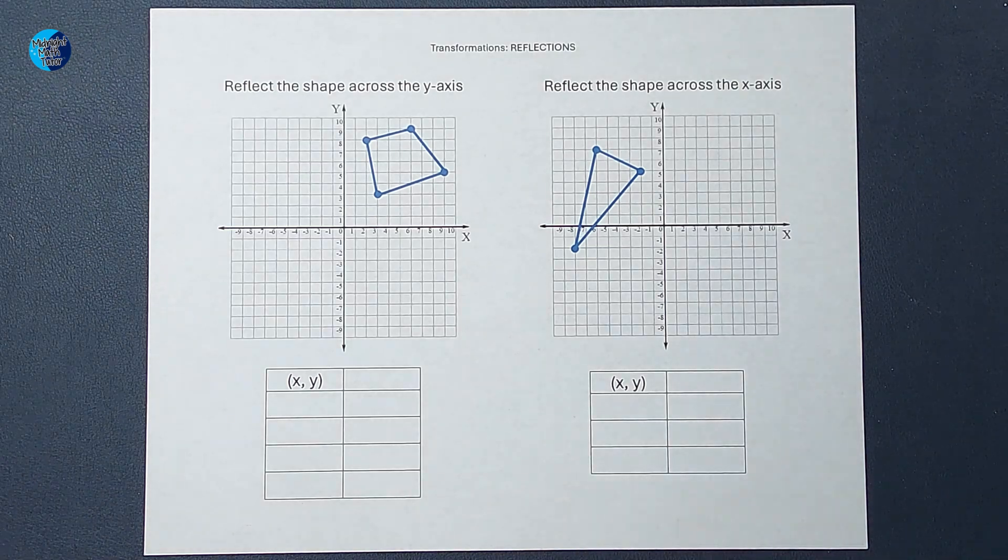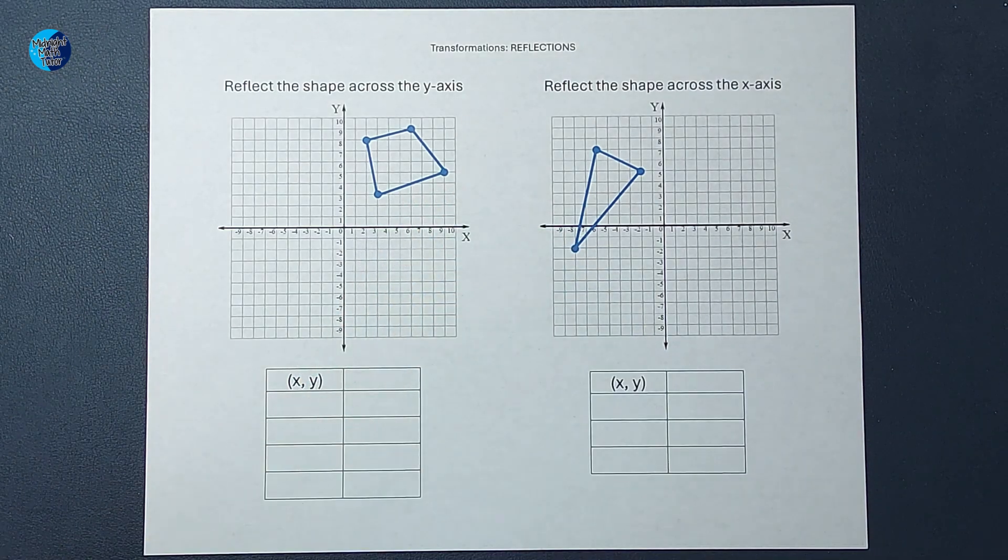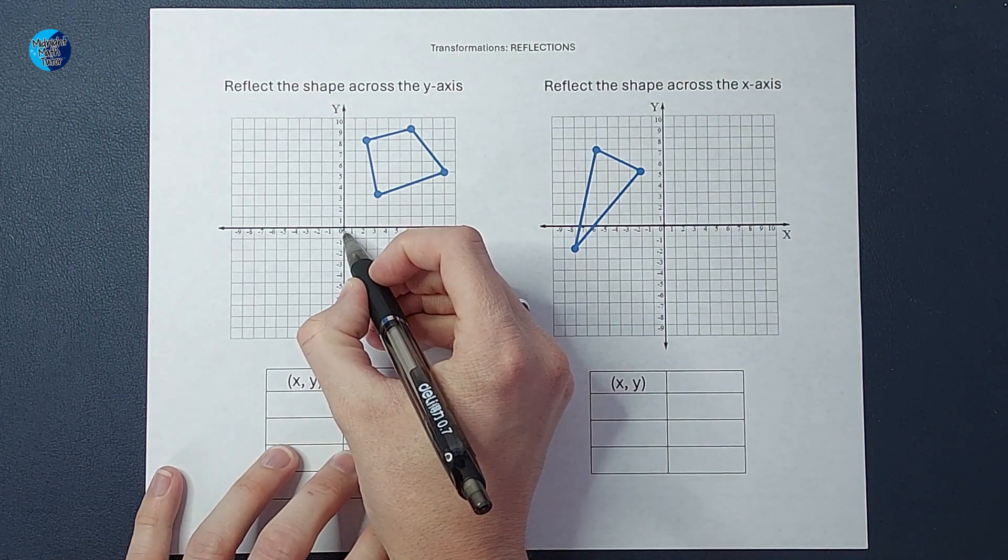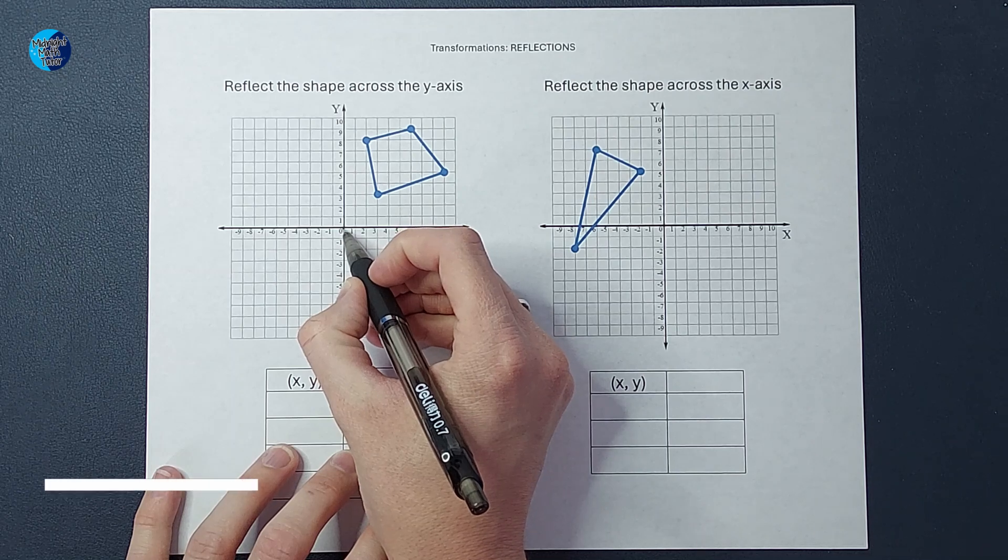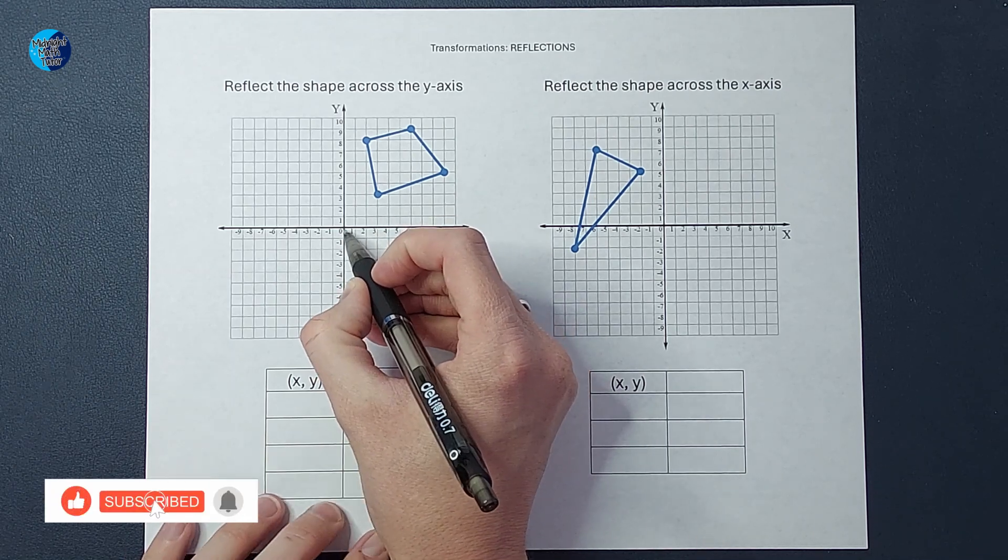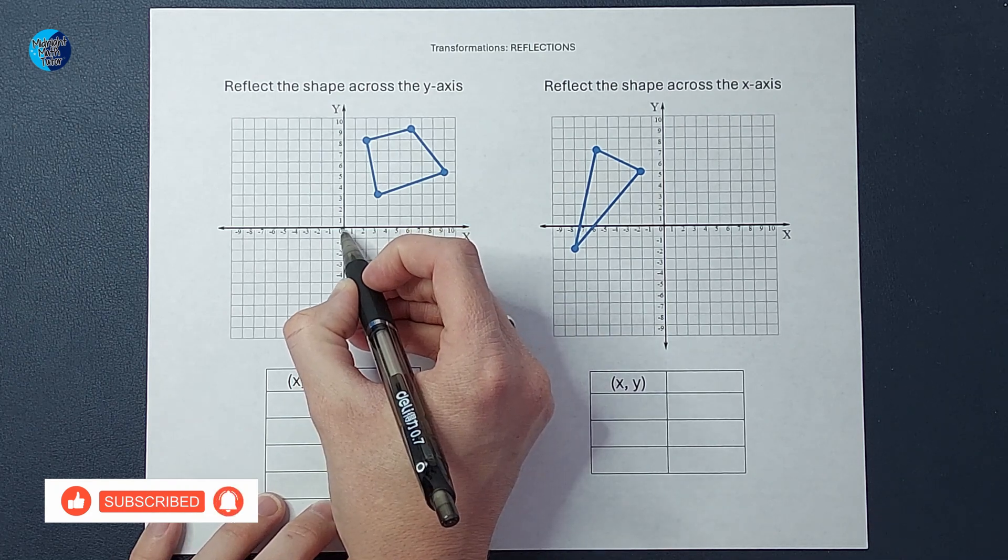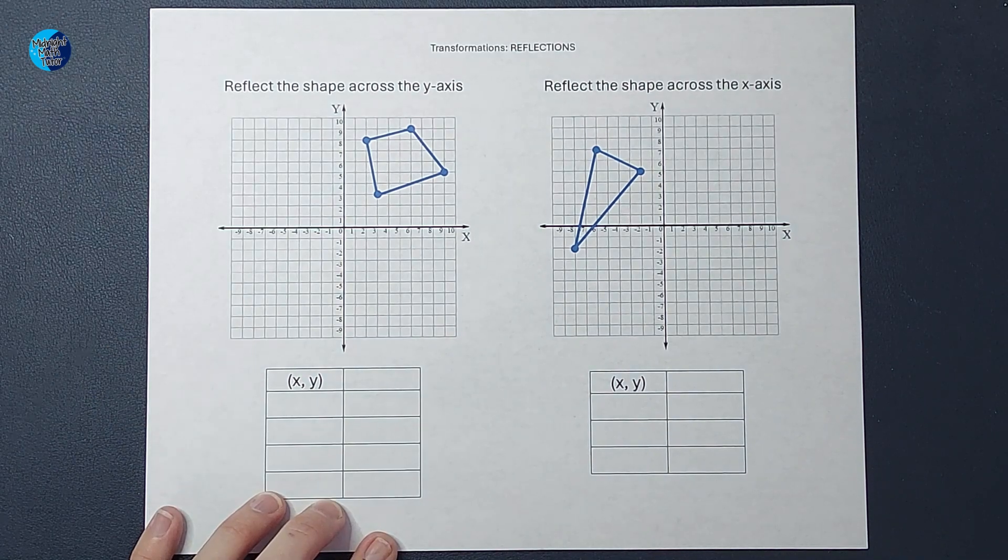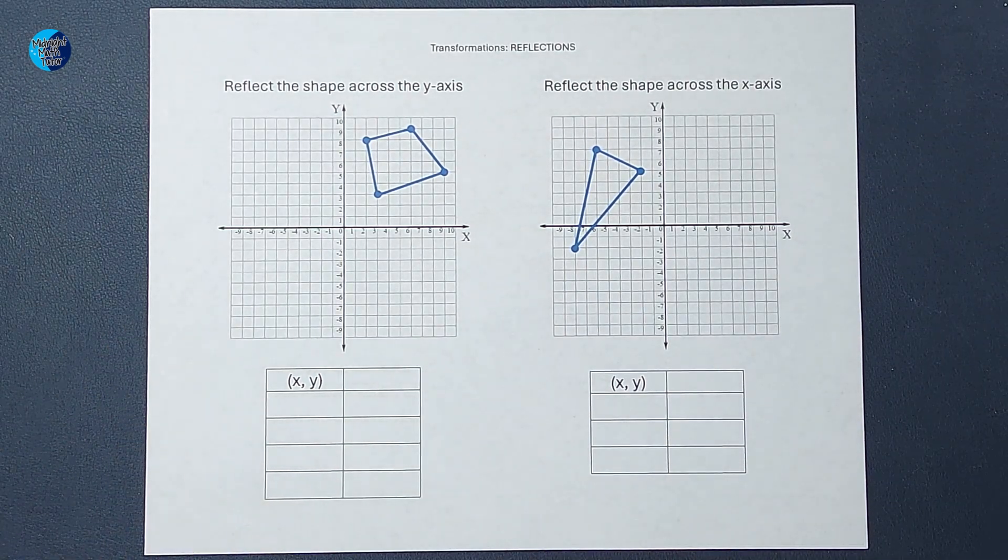So if we think about it, if I was doing that and not using any sort of strategy, and I was just figuring this out, I might go, okay, so on this side, it's over three, up three. So to do it on the other side, I'm going to go over three the other way and still go up three. So we can think about it that way.